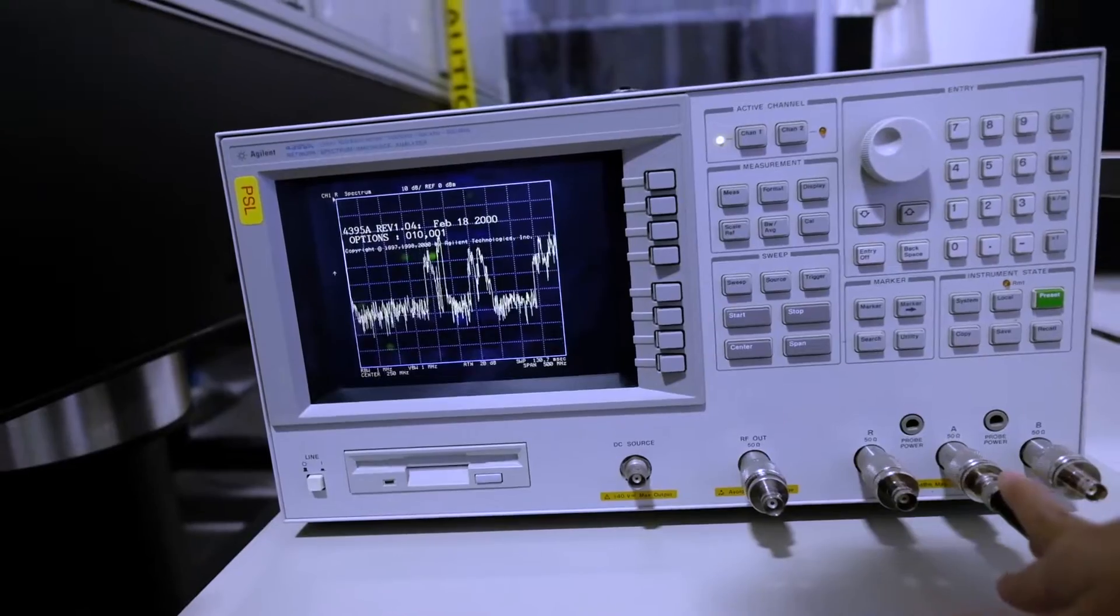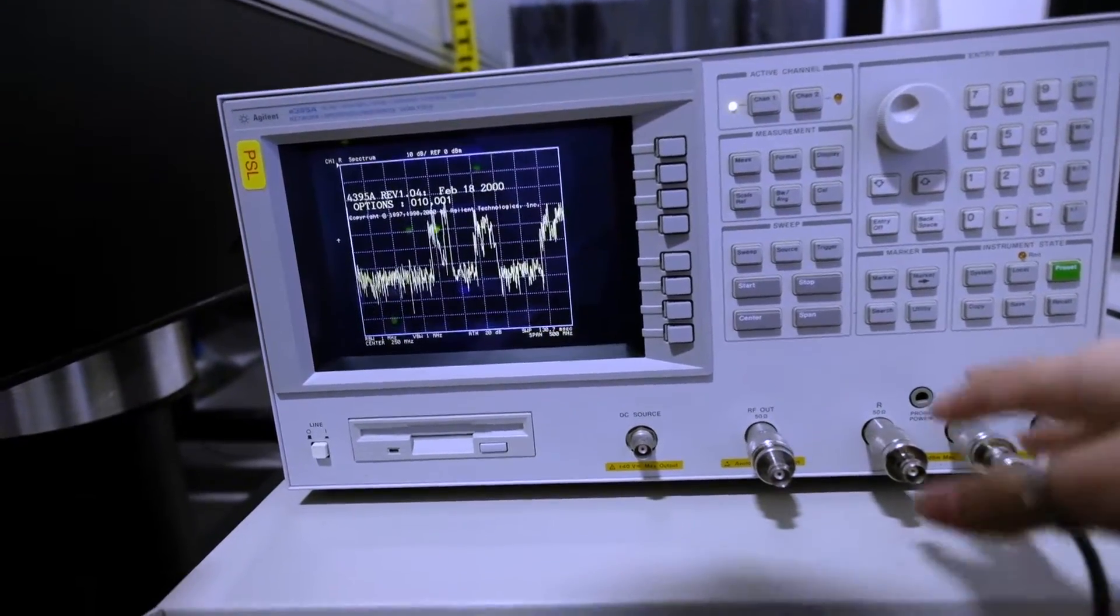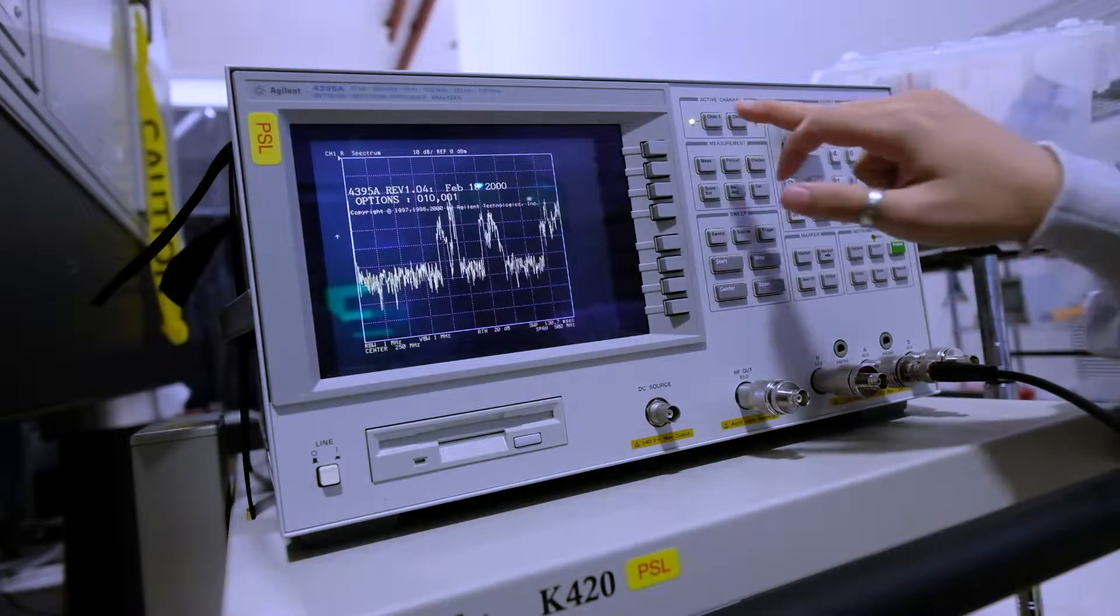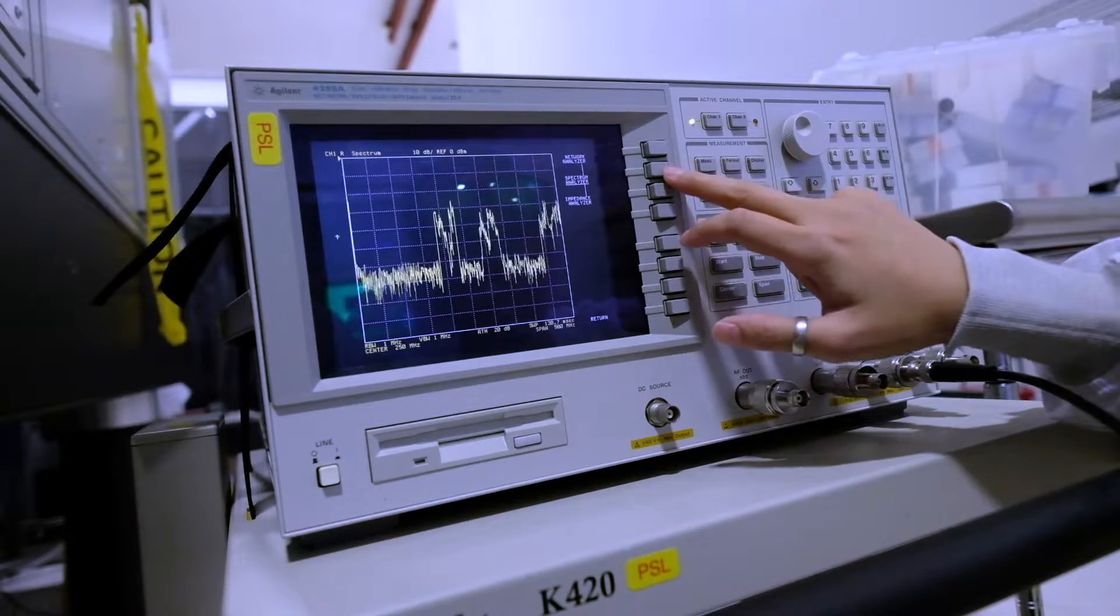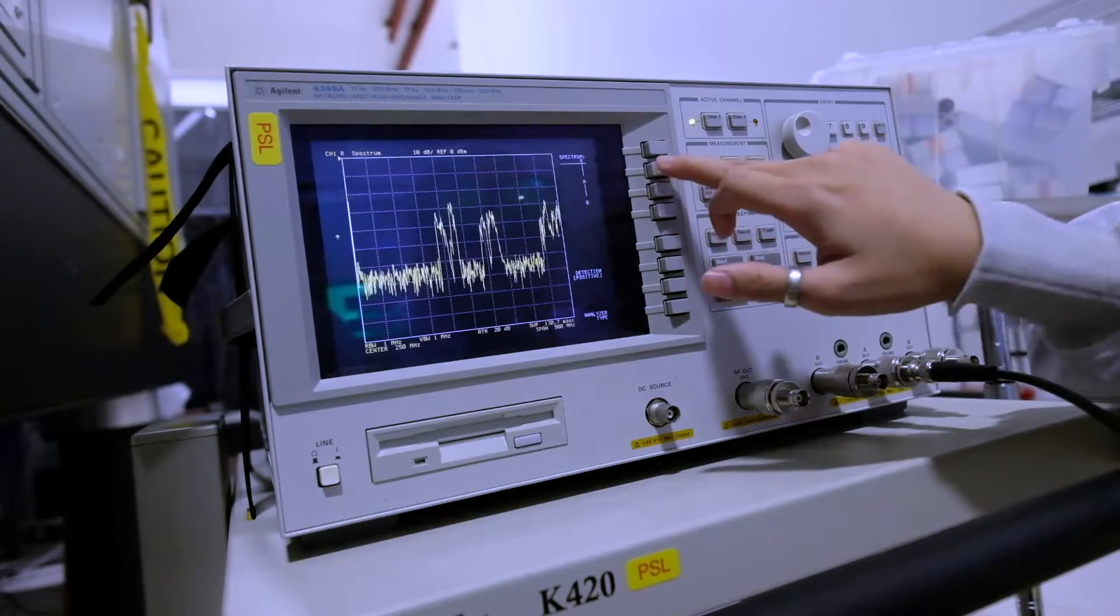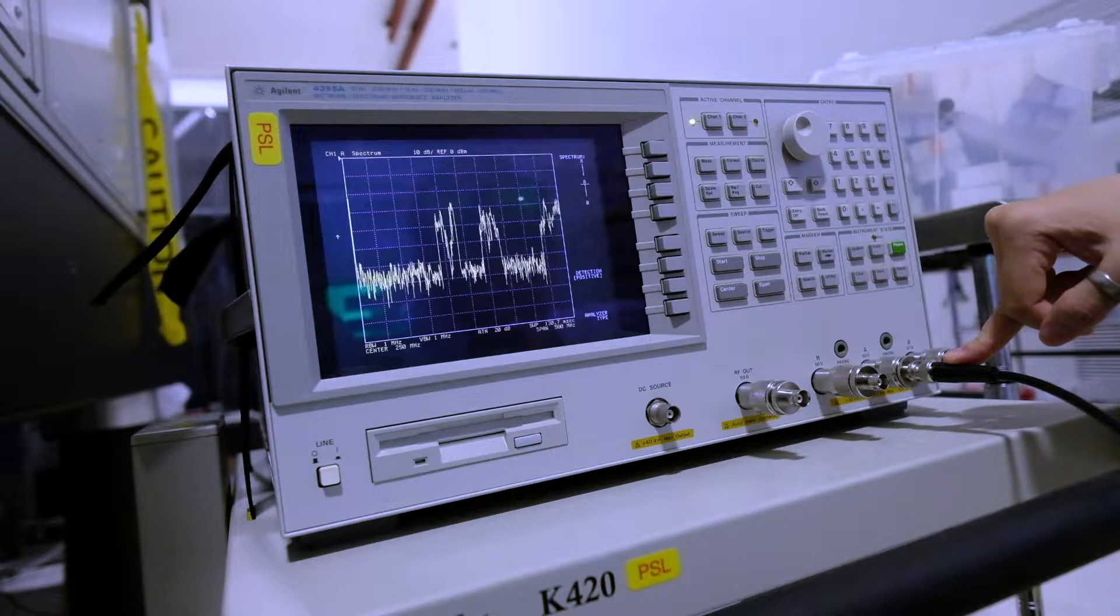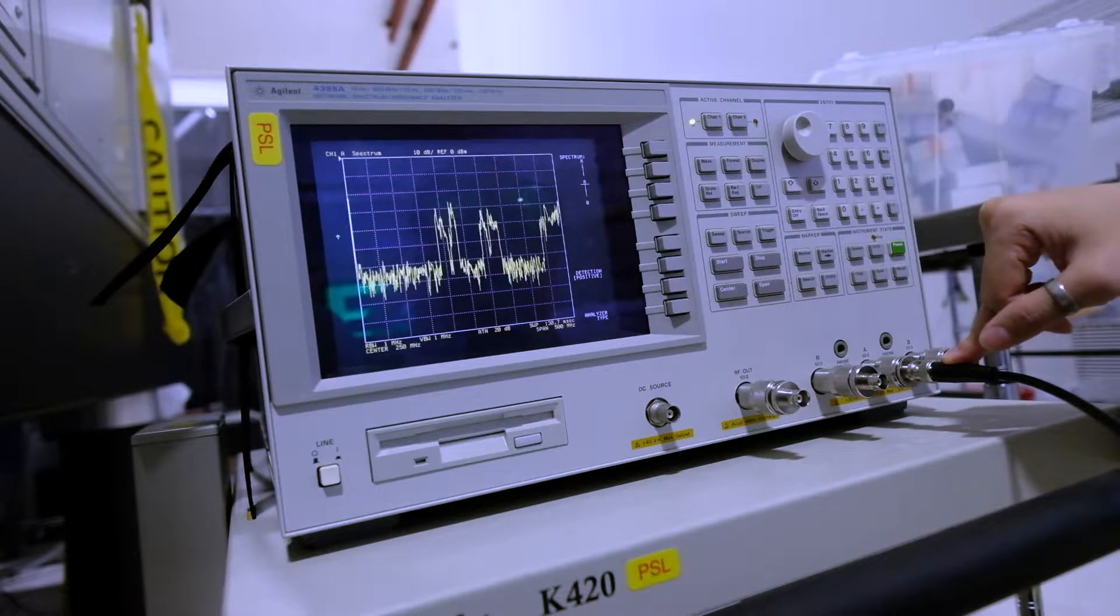Here I have just plugged in my signal to channel A. So what you would do is, you want to go to measure, analyzer type. You want spectrum analyzer and you want to make sure that your channel is correct. So here I plug it to channel A. I'm going to use channel A.